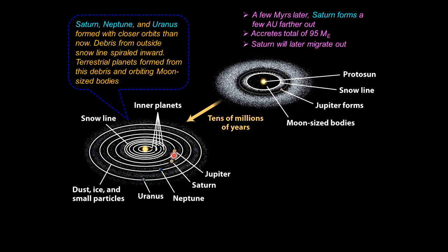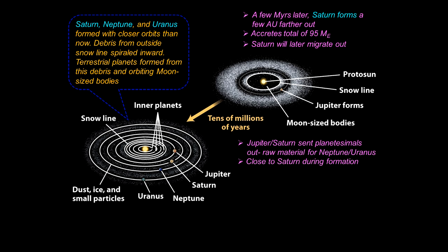Within a few million years, Saturn forms a few astronomical units further out than Jupiter. Jupiter had already used up so much of the heavy elements — the metals and minerals — that there just isn't as much material for Saturn. Saturn is pretty big but not nearly as big as Jupiter, reaching about 95 Earth masses, with far less proportion of metals and minerals. Jupiter and saturn are significant in their collective effect on sending planetesimals either outward or inward, and the ones sent out are the raw materials for Neptune and Uranus.